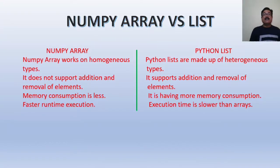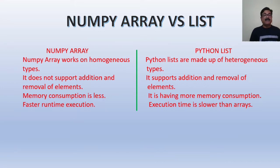Now let's see the difference between a NumPy array and a Python list. A NumPy array works on homogeneous data types, but a list can keep heterogeneous data — meaning different types of data can be stored. NumPy arrays do not support addition and removal of elements, whereas lists support removal and addition of elements. NumPy arrays have less memory consumption and faster runtime execution, whereas Python list iteration time is slower than the array.